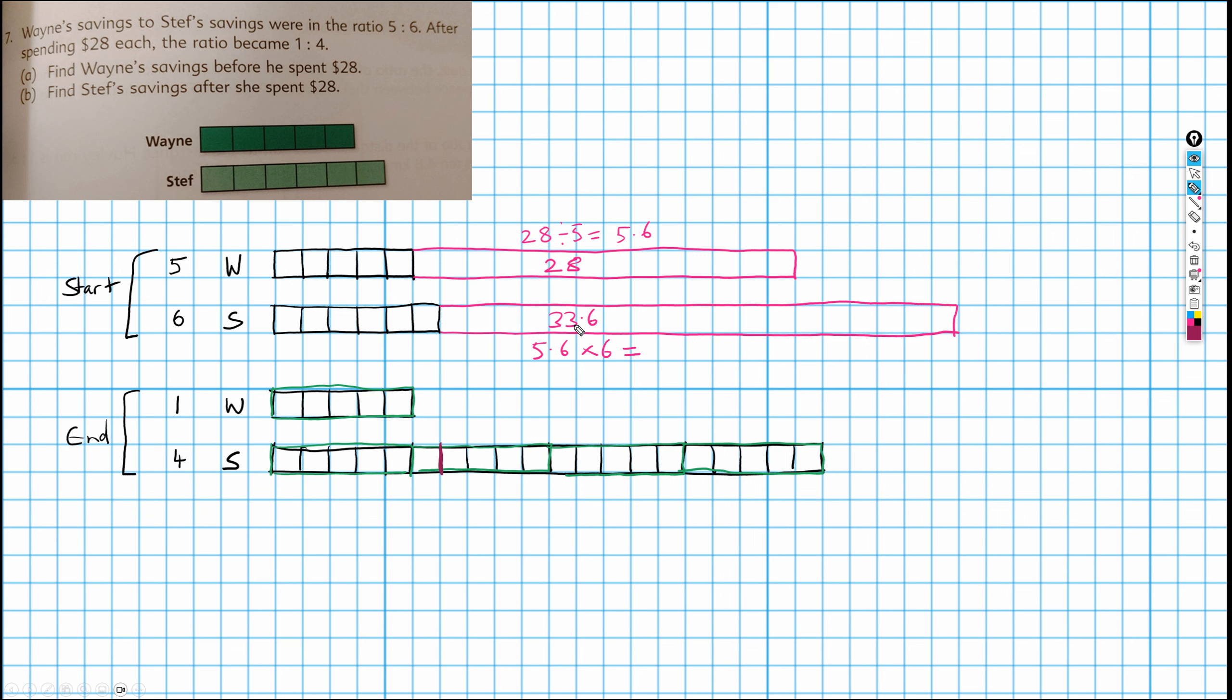So we need to know the difference between 33.6 and 28. We happen to know that because this was 5 times 5.6, and this is 6 times 5.6. So the difference, 33.6 minus the 28 is 5.6. So we know then that this bit, which is the difference, this is money that she still has, which must be the difference between these two amounts.